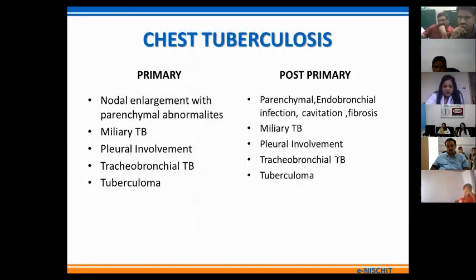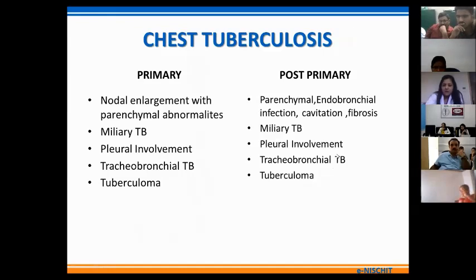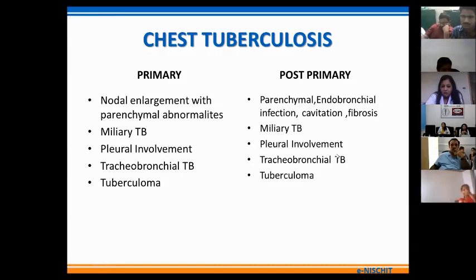To reiterate: primary TB presents mainly as mediastinal lymph nodal enlargement with few parenchymal abnormalities, while the post-primary form is manifested mainly by parenchymal densities, evidence of endobronchial infection, cavitation, and fibrosis. The other forms — miliary TB, pleural involvement, tracheobronchial TB, and tuberculomas — can be seen both in the primary as well as the post-primary form of disease.